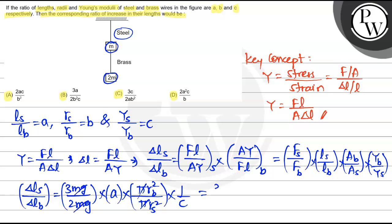So this becomes: mg cancels, 3 by 2 into a into radius rb by rs. Now rs by rb we have as b, so its reverse rb by rs is 1 by b. If this is squared, it becomes 1 by b square into 1 by c.